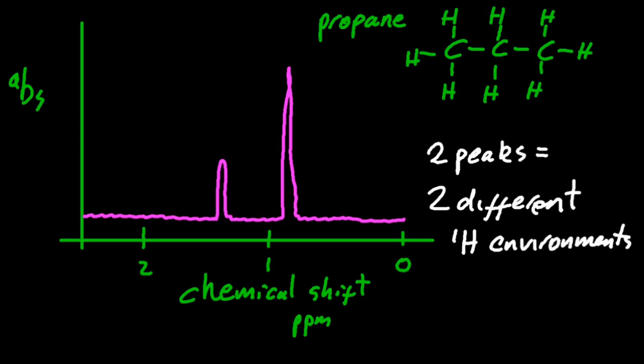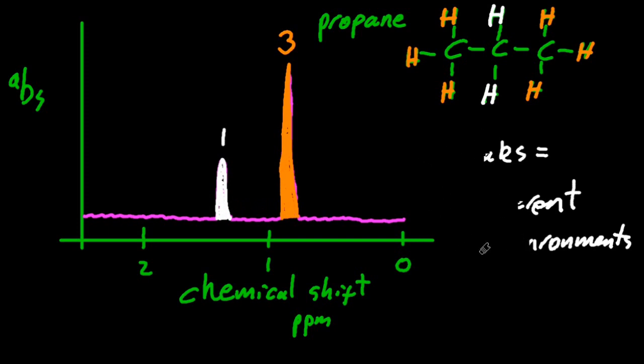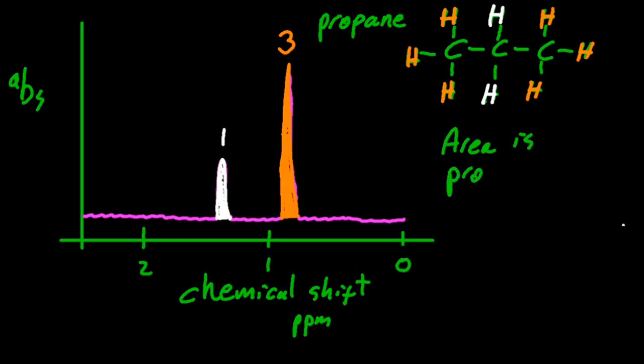If I fill in this peak, the smaller one corresponds to that hydrogen environment there in the middle of the molecule. And these six hydrogens are responsible for the other hydrogen environment. If I was to measure the area underneath that peak and look at the ratio of the areas, I'd get one to three, which is also equivalent to the six to two that we have in the propane. So the area is proportional to the ratio of hydrogen ones in each environment.